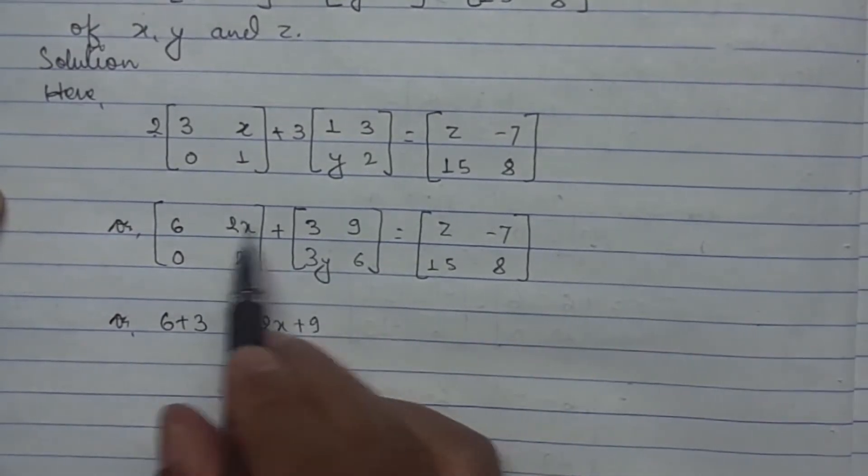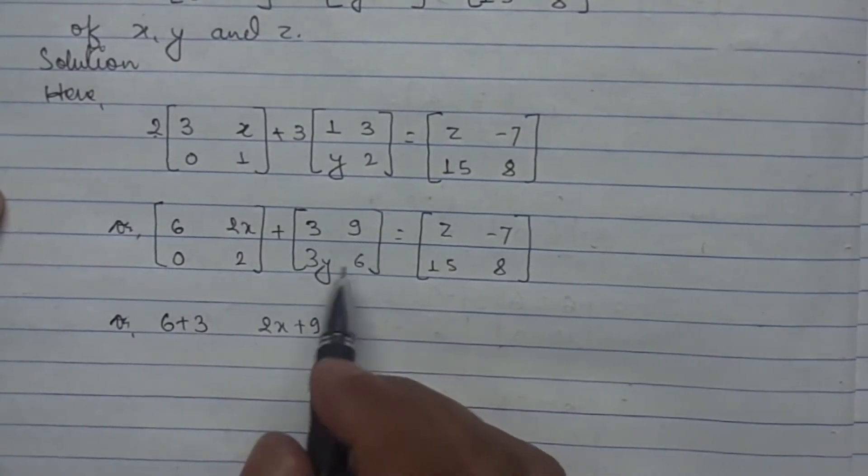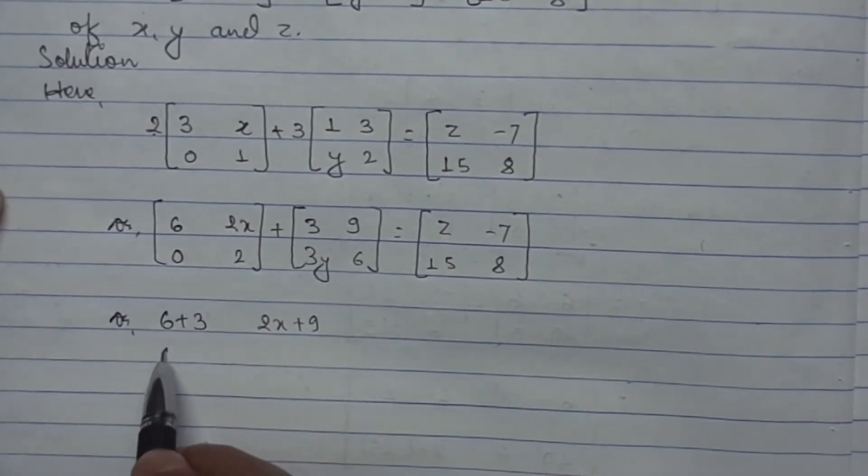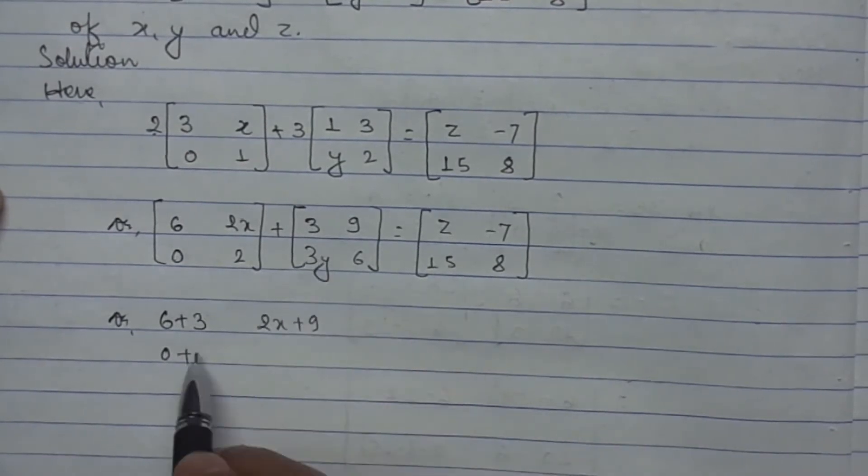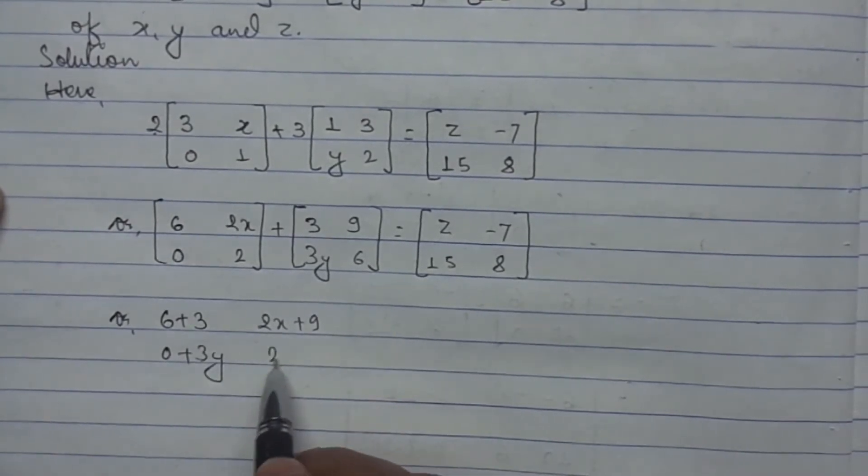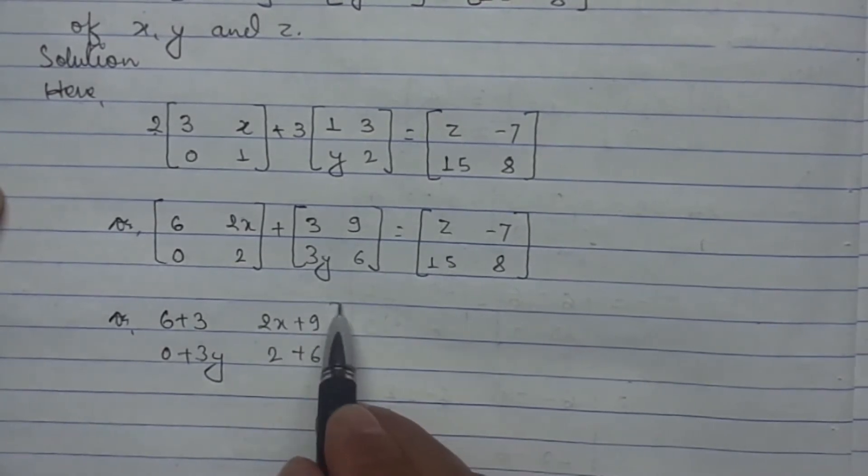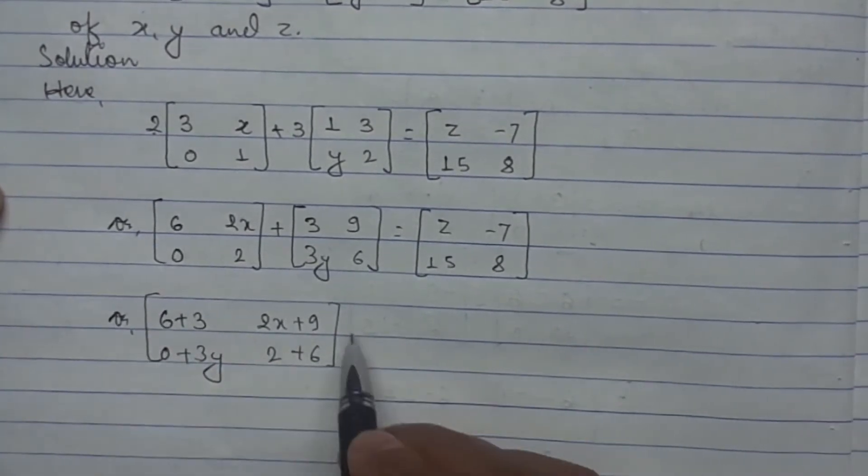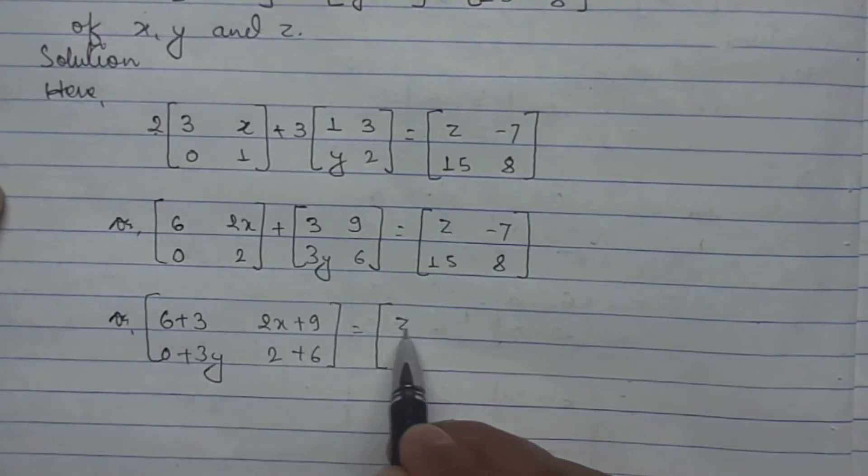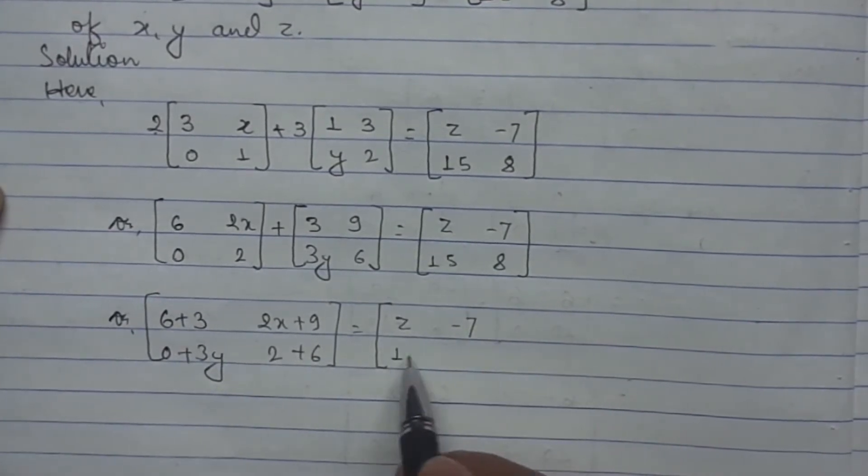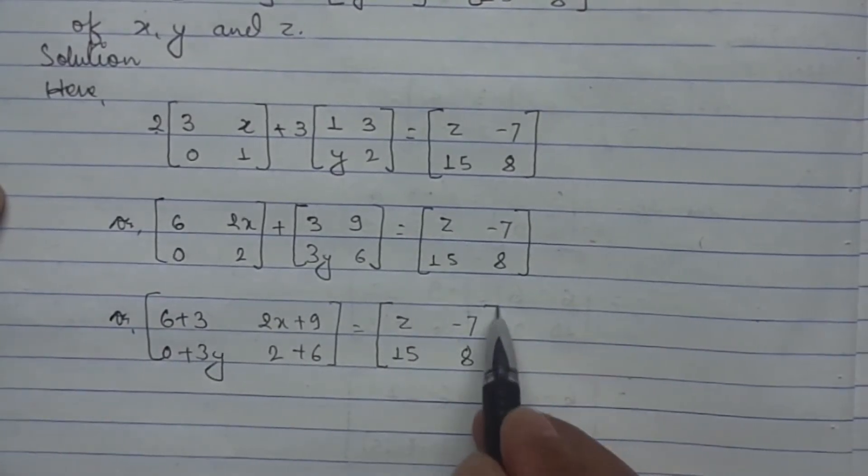It is 2x plus 9, not added because 2x and 9 are unlike terms. This 0 plus 3y, this 2 with the 6, 2 plus 6 equals [z, -7; 15, 8].